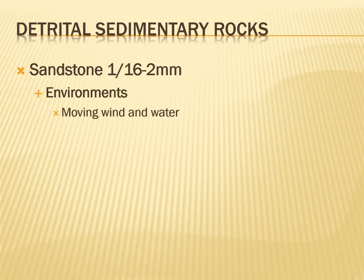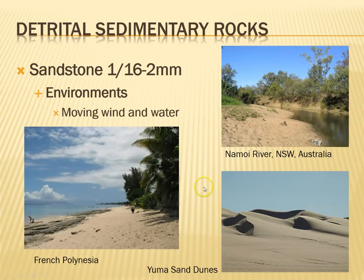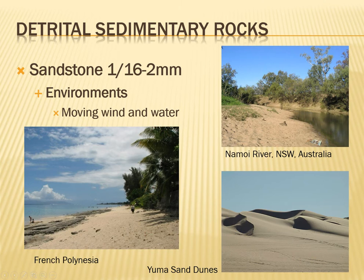A little bit bigger pieces and we have sandstone. Sandstone forms where you have nice moving wind and water — pretty much any time wind or water moves, it's able to pick up sand fairly easily. Where are some examples where sand piles up? A beach — sandy beaches are great places to form sandstones. Some riverbeds also carry sand-sized pieces. Or sand dunes in deserts — these big, sweeping sand dunes. This is actually a look at how the rocks at The Wave we started with were formed.